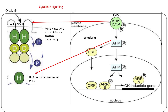In cytokinin signaling, at the site of action, cytokinins are perceived by transmembrane proteins that have a CHASE domain on the outer side and a kinase domain on the cytosolic side. Cytokinins bind to the CHASE domain, and this activates the histidine kinase that auto-phosphorylates the protein. Phosphotransfer then occurs from the phosphorylated histidine to an aspartate molecule that is part of the same protein.